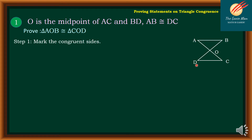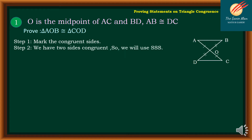For step number one, mark the congruent sides. From the given, we can say that AO is congruent to OC because O is the midpoint of line segment AC. Also, DO is congruent to BO because O is the midpoint of line segment DB. So we now have two sides congruent, and we can use the SSS or side-side-side congruence postulate.